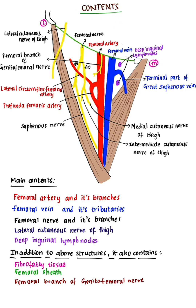Contents of the femoral triangle. The main contents are: femoral vessels — femoral artery and its branches, femoral vein and its tributaries — femoral nerve and its branches, lateral cutaneous nerve of the thigh, and deep inguinal lymph nodes.